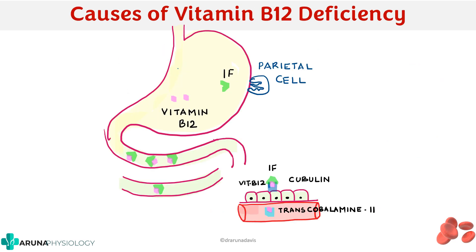Now we will see the causes of vitamin B12 deficiency. This image shows how vitamin B12 is absorbed in the body. When we have vitamin B12, it combines with a factor called intrinsic factor, which is produced by the parietal cells. The intrinsic factor combines with vitamin B12, and ultimately when it reaches the terminal ileum, vitamin B12 combines to a receptor called cubilin and is then transported in the blood via transcobalamin 2.